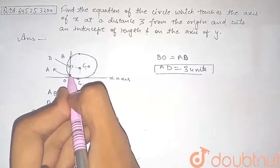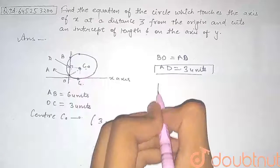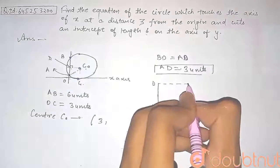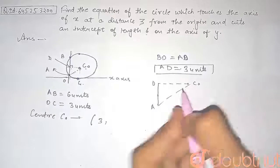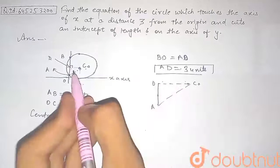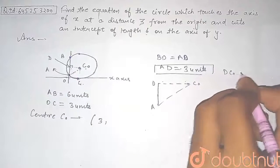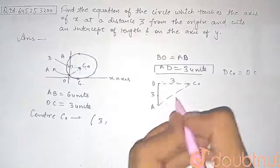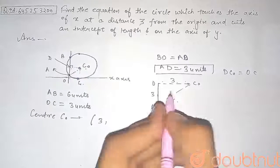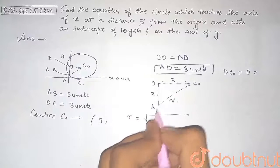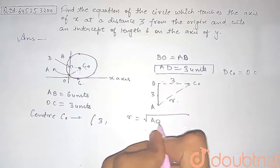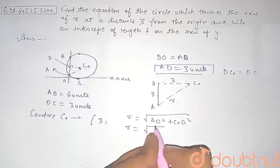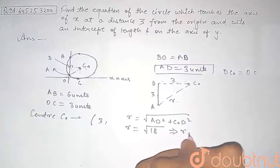We join point A with center C₀ and form a right triangle with vertices D, A, and C₀. The distance DC₀ equals OC, which is 3 units, and AD is also 3 units. Using the Pythagorean theorem, the radius r equals √(AD² + C₀D²) = √(3² + 3²) = √(9 + 9) = √18, so r = 3√2.